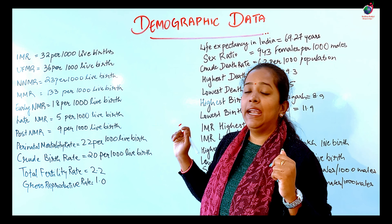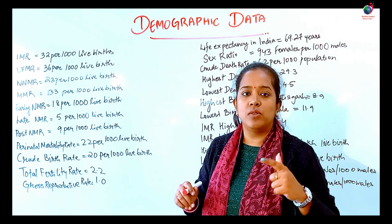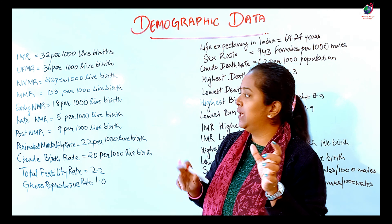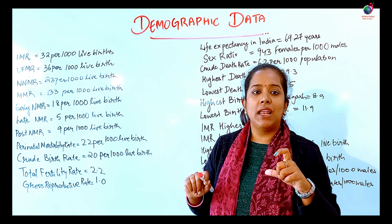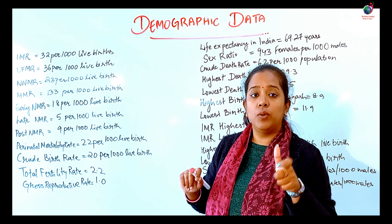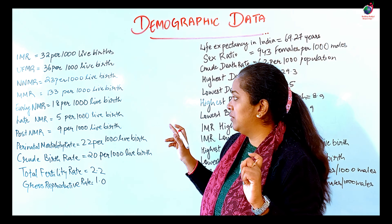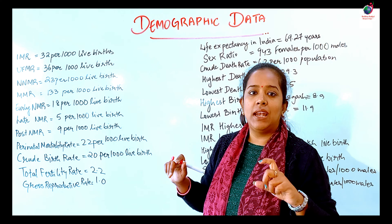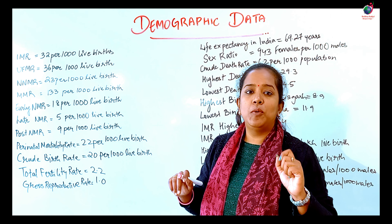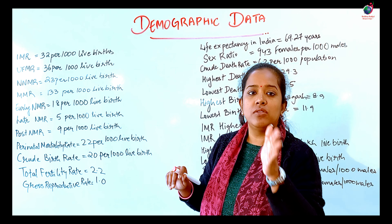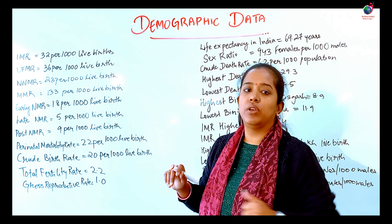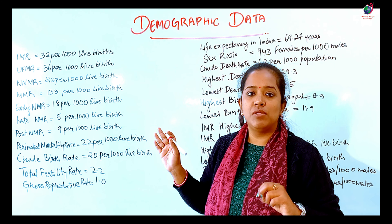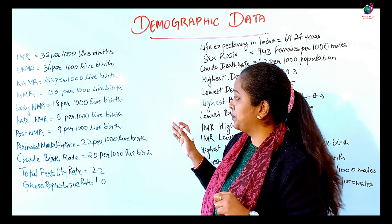Early Neonatal Mortality Rate is 18 per 1,000 live births, and Late Neonatal Mortality Rate is 5 per 1,000 live births. Post-neonatal Mortality Rate is 9 per 1,000 live births.